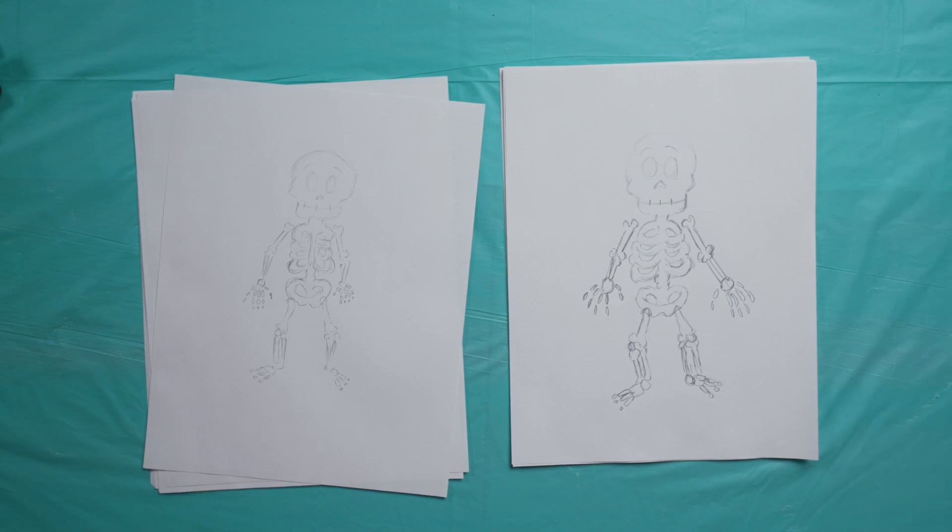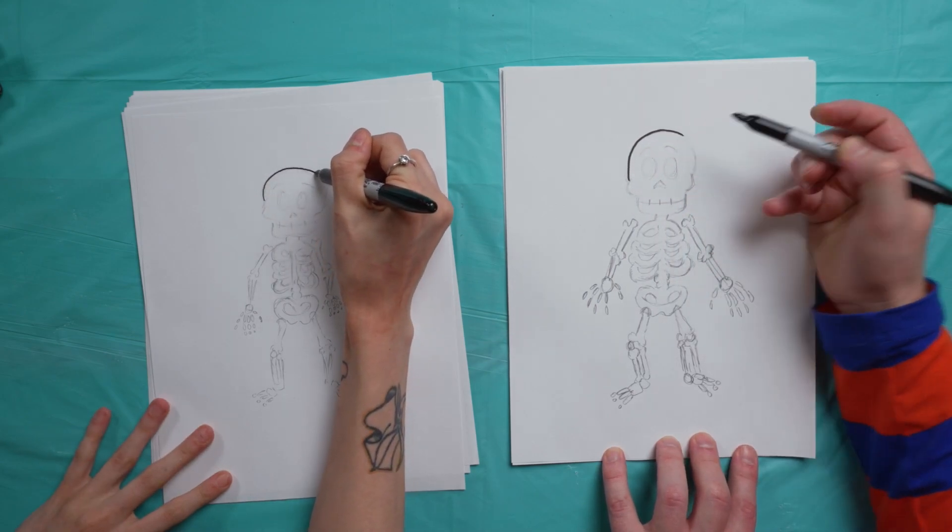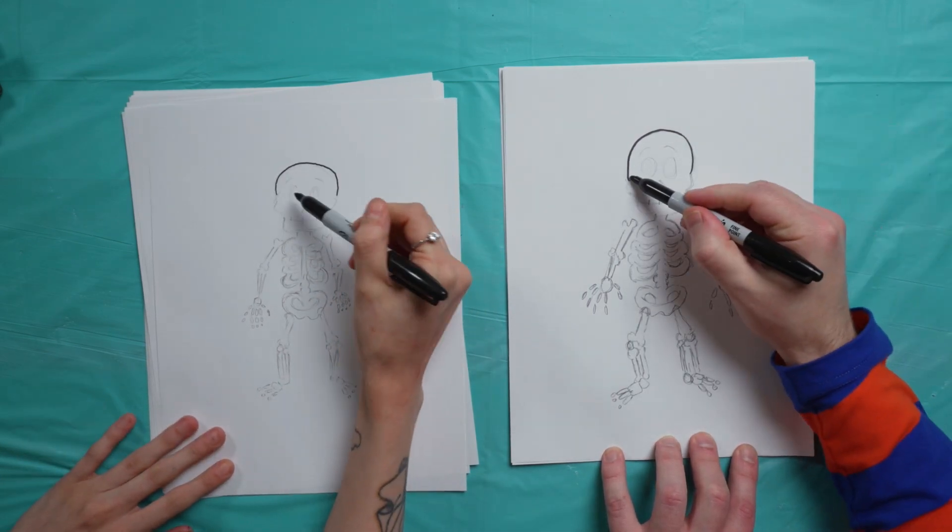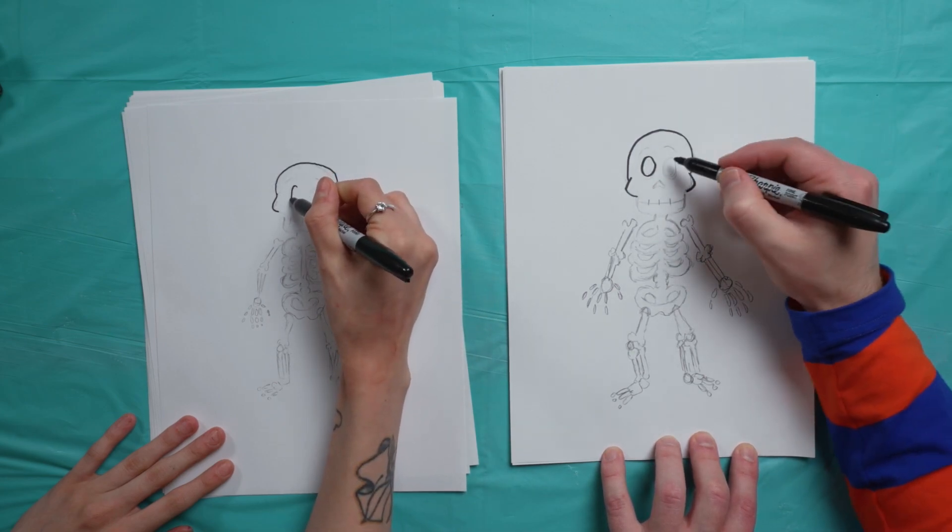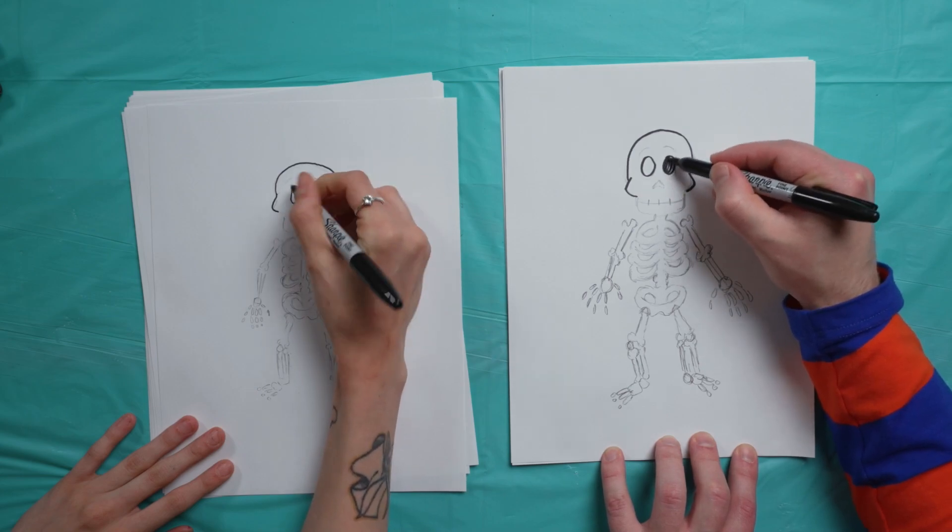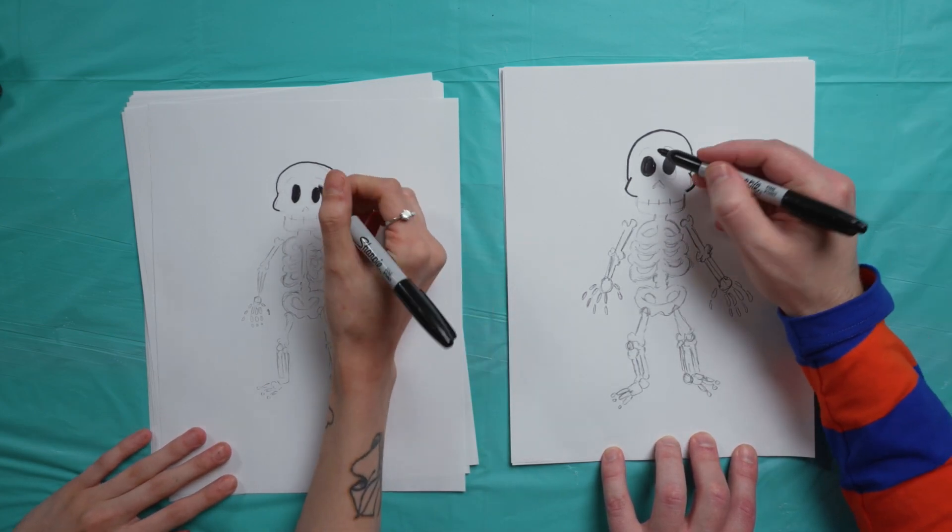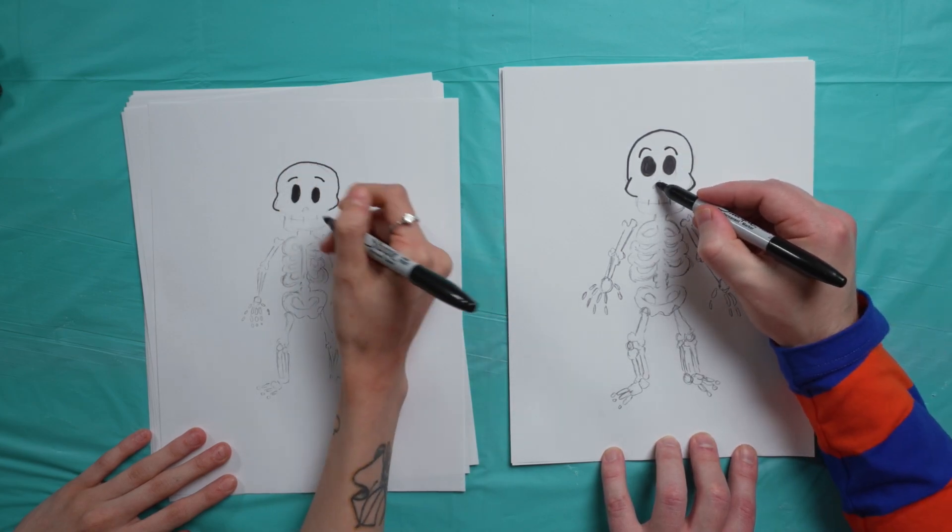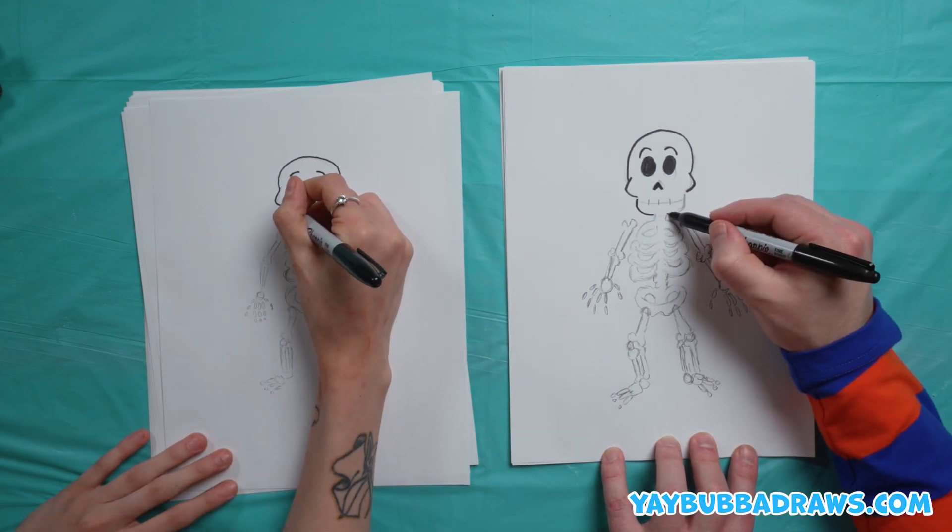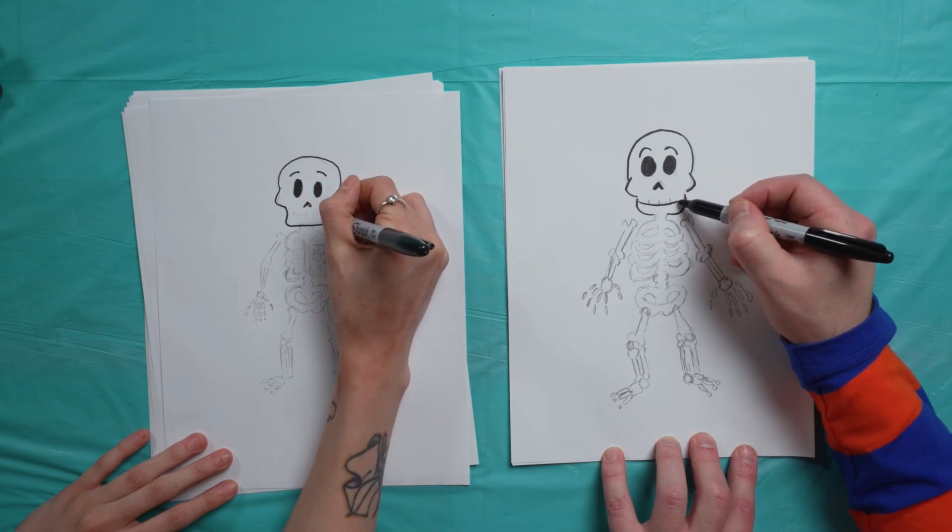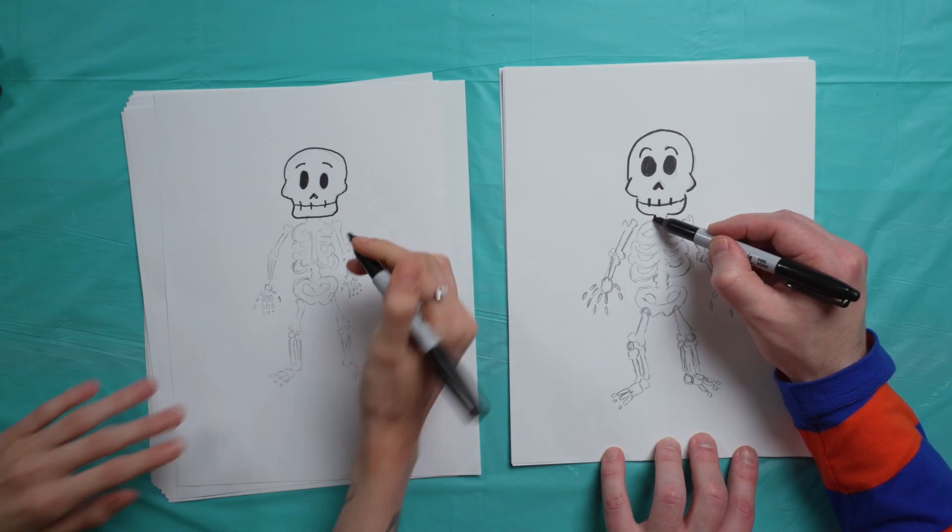Let's get our marker. And we're going to outline. We're going to start back at the top and do the skull. Little cheek triangle shapes and the eyes. We'll fill them in. And the eyebrows, little nose, and the mouth.